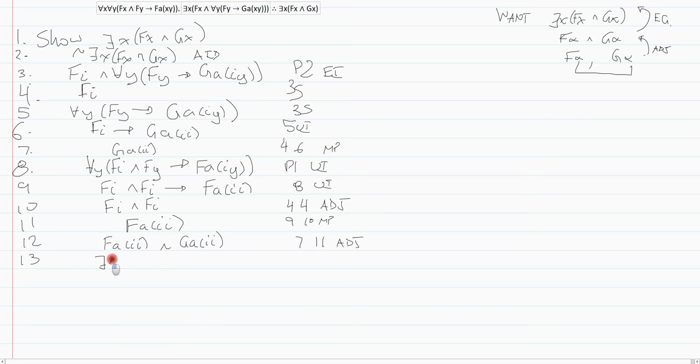Now remember how EG works. You can existentially generalize any sort of term you want, so I'm generalizing aii and then I can do as many instances of it as I want as well, and then I can change it to whatever variable letter I want, and in this case I want x. So that's 12 existentially generalized direct derivation and that's it.